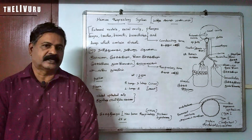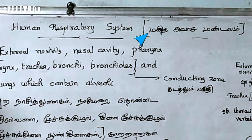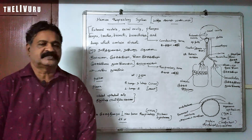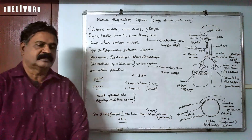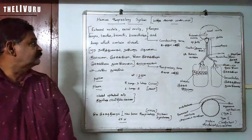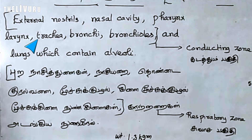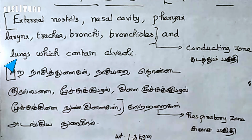In this video, we are going to see the respiratory system of human beings. The respiratory system of a human consists of external nostrils, nasal cavity, pharynx, larynx, trachea, bronchi, bronchioles, and lungs which contain alveoli.